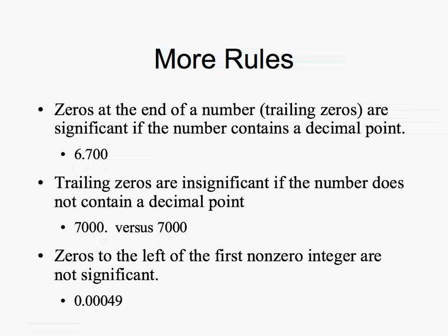Another rule: zeros to the left of the first non-zero integer are not significant. So here we have 1, 2, 3 zeros — these three zeros are not significant. The 4 is our first non-zero number, and the numbers to the left of it are not significant. This rule generally applies to numbers that are less than 0.1 — essentially all the fractions.